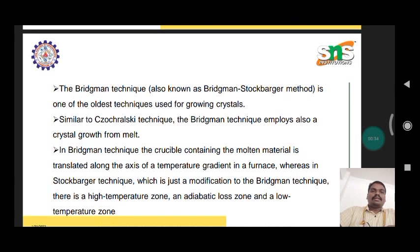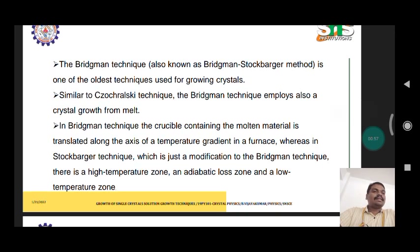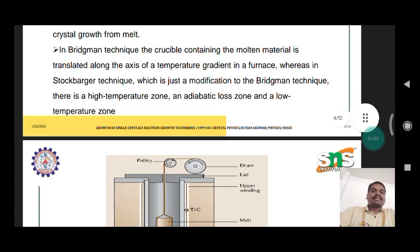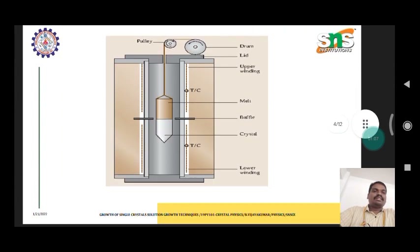The Bridgman technique is one of the oldest techniques used for growing crystals. It employs a melt growth approach. In the Bridgman technique, the crucible containing the molten material is translated along the axis of the temperature gradient in a furnace.